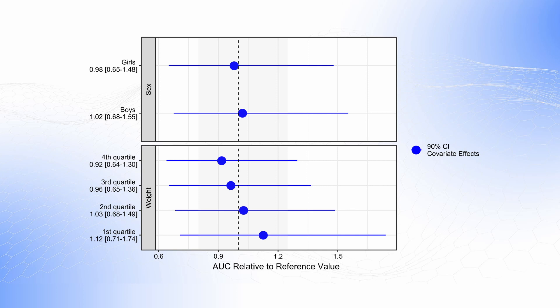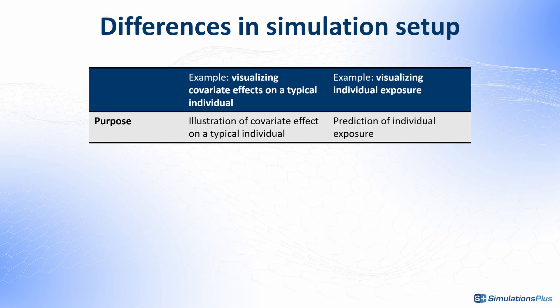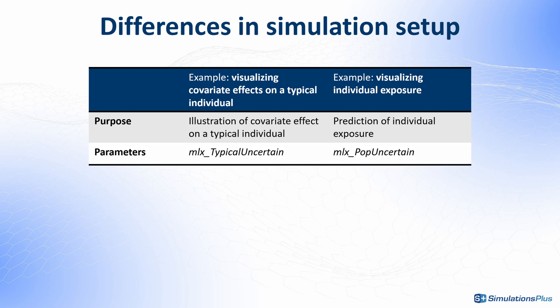There are some differences in the setup of the simulations used when creating forest plots showing individual exposure versus forest plots showing covariate effects on exposure of a typical individual. We use the MLXPopUncertainSA element to create forest plots that show individual exposure, because it contains information about values and uncertainties of both fixed effects and random effects, instead of MLXTypicalUncertain, which has random effects set to zero.